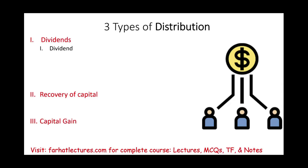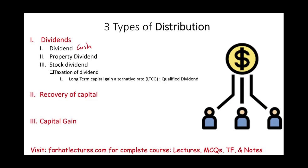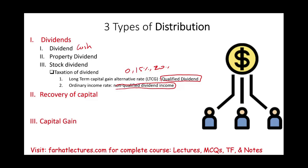What is a dividend? A dividend could be a cash dividend, a property dividend, or additional stock in proportion to your current position — so if you own 10% and they distribute 100 shares, you get 10 of them. How do we tax dividends? It's taxed at the long-term capital gain alternative rate as long as it's a qualified dividend — that's 0%, 15%, or 20%. Or the dividend could be an ordinary, non-qualified dividend, which is taxed at the ordinary rate, the highest level.